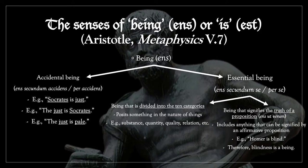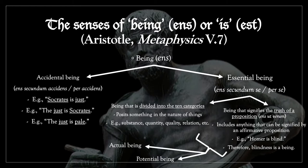So even non-beings and negations are considered beings in the second kind of essential being, that is 'ens ut verum'. But in the first kind of being — the being that is divided into the ten categories — only positive things are called beings. Both the being that is divided into the ten categories and the being that signifies the truth of a proposition are divided into actual being or being in act, and potential being or being in potency.